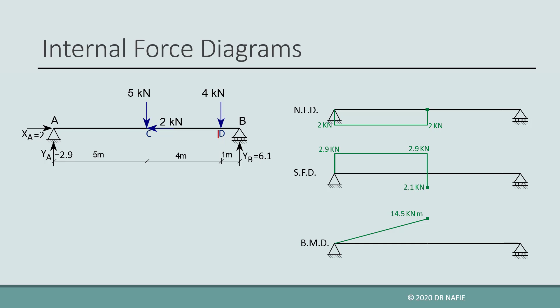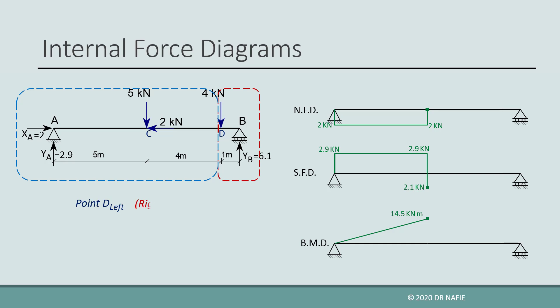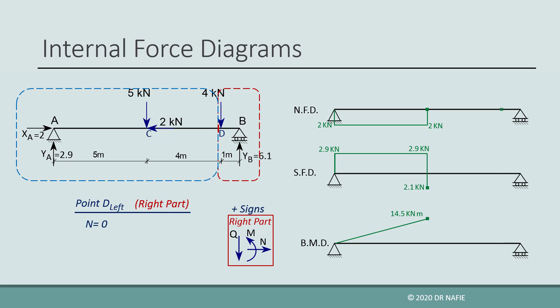Next, we move to the point just to the left of point D. For this location we work on the right part, applying the sign convention for the right part. The right part has no horizontal force, so the normal force is zero. We have two vertical forces, YB and a 4 kN vertical force, which sum to −2.1 kN for the shear. The bending moment is evaluated by taking the moment about point D; the 4 kN force passes through D and is excluded. YB multiplied by a 1 meter arm gives +6.1 kN·m.